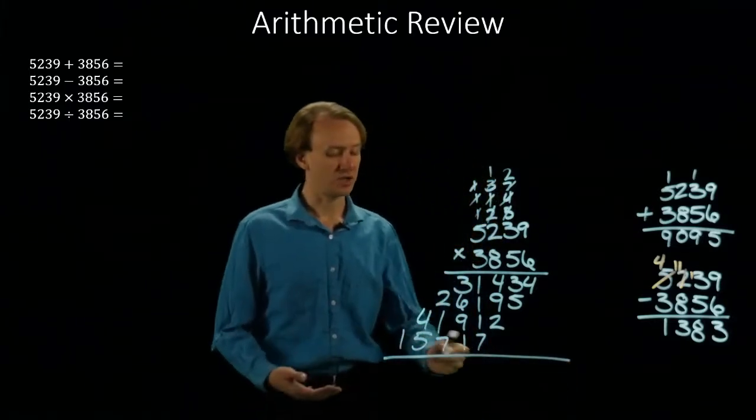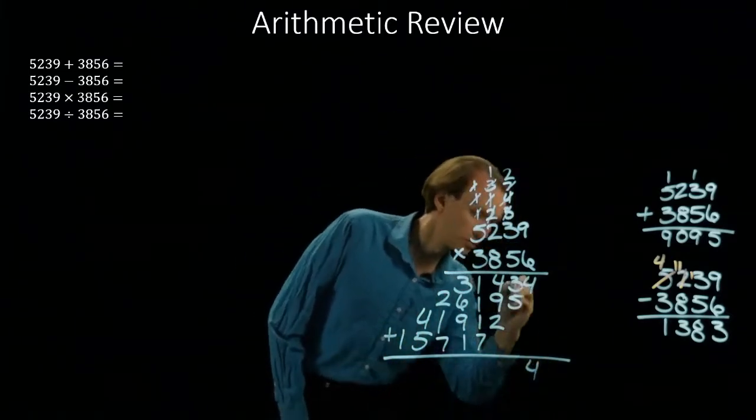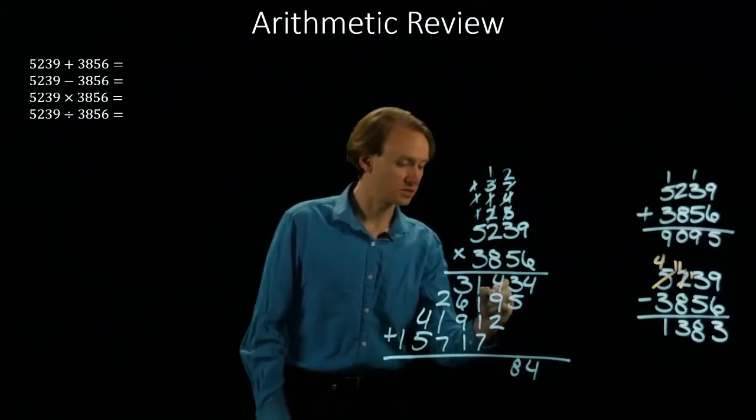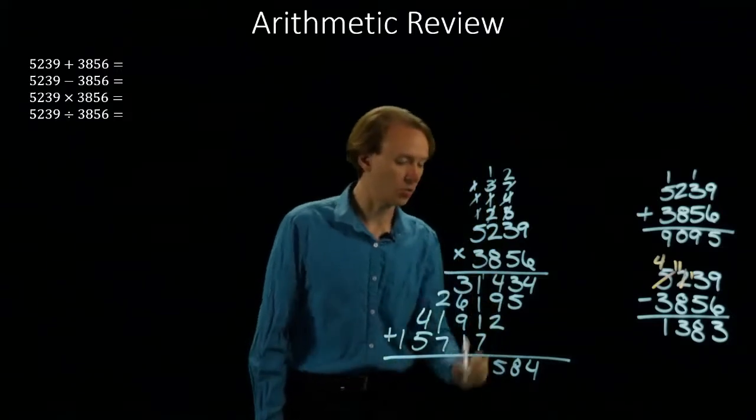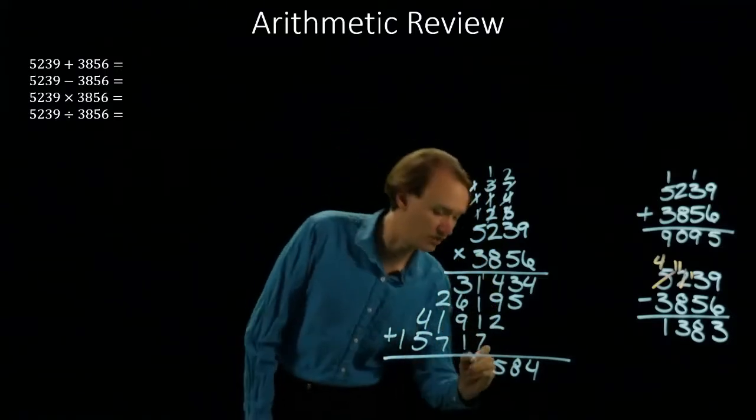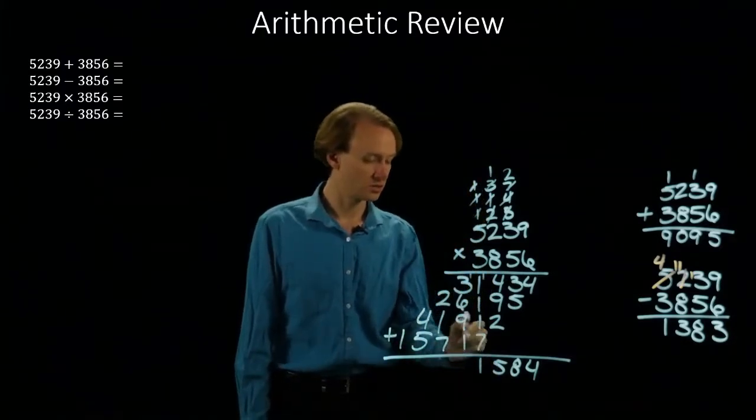Now I just have to add up all of these numbers that I've got. 4, 3 plus 5 is 8. 4 plus 9 is 13, plus 2 is 15. 5 carry a 1. 1, 2, 3, 4, plus 7 is 11. So 4, 10, 20.